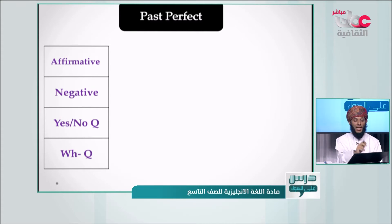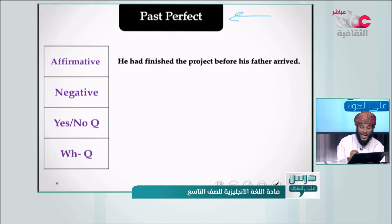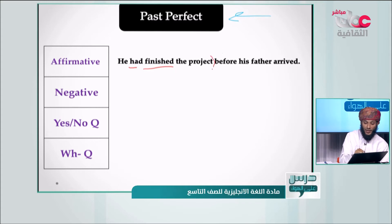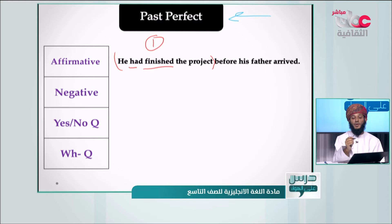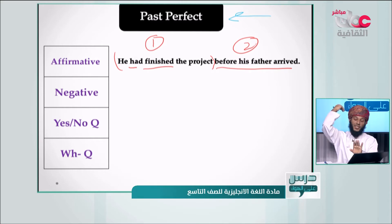To form an affirmative sentence using the past perfect, we say: 'He had finished the project before his father arrived.' We have two actions here. Action number one: 'he had finished the project.' Action number two: 'his father arrived' — at a specific time in the past. Before the arrival of his father, he had already finished his project. We don't know the exact time of the first activity.